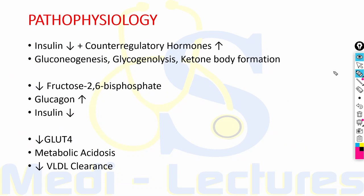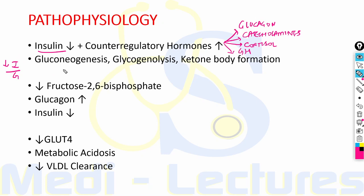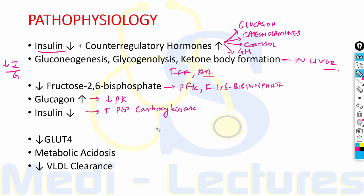DKA results from either absolute or relative insulin deficiency along with increase in counter-regulatory hormones: glucagon, catecholamines, cortisol, and growth hormone. Both insulin deficiency and glucagon excess are necessary for DKA to develop. Due to a decreased insulin-to-glucagon ratio, there is development of gluconeogenesis, glycogenesis, glycogenolysis, and ketone body formation in the liver, along with increased substrate delivery from fat and muscle — free fatty acids from fat and amino acids from muscle.